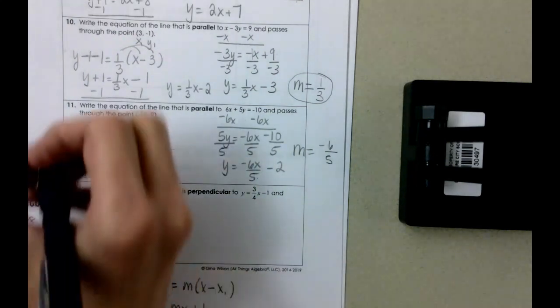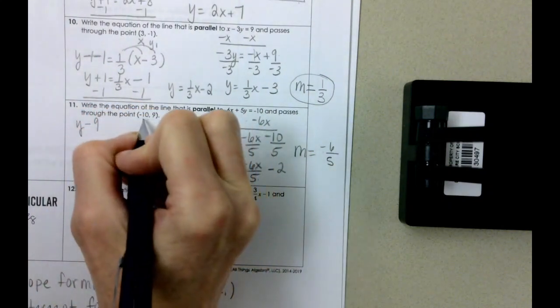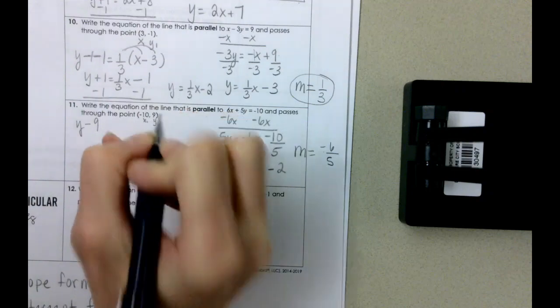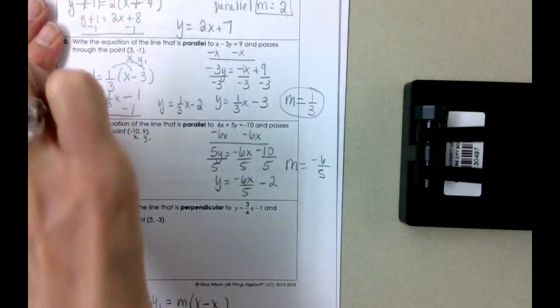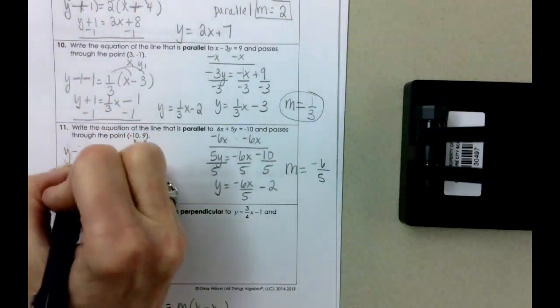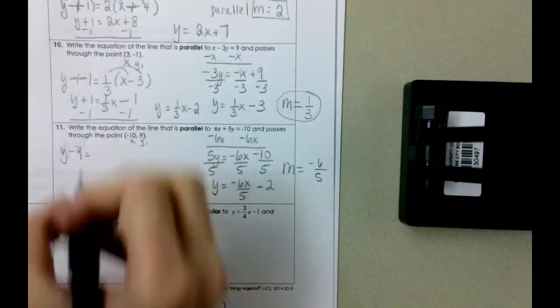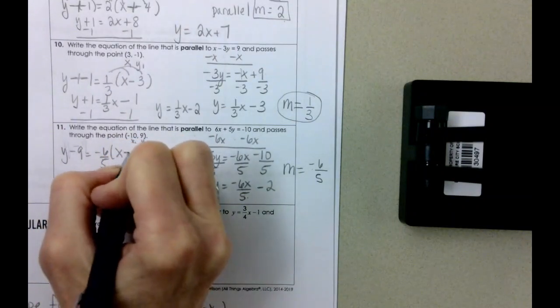So when we come over here, y minus y1, I should have labeled here x1, y1, y minus y1. And I'm just going to scoot this down a little bit so you can see it. But y minus y1 equals negative six fifths times x minus negative 10.